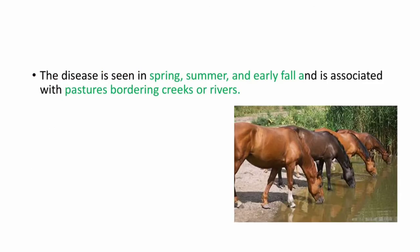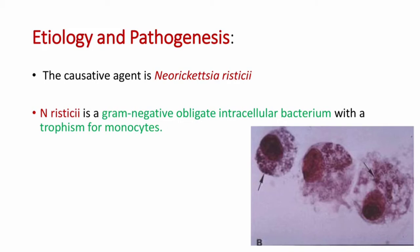The disease is seen in spring, summer, and early fall, and is associated with pastures bordering creeks or rivers. Coming to the etiology and pathogenesis, the causative agent is Neorickettsia risticii.